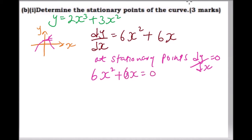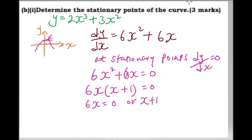We factor out 6x, leaving x(x plus 1) equals zero. This means 6x equals zero or x plus 1 equals zero. Dividing by 6 gives x equals zero, or taking 1 to the other side gives x equals minus one. So these are the x-values of the stationary points.